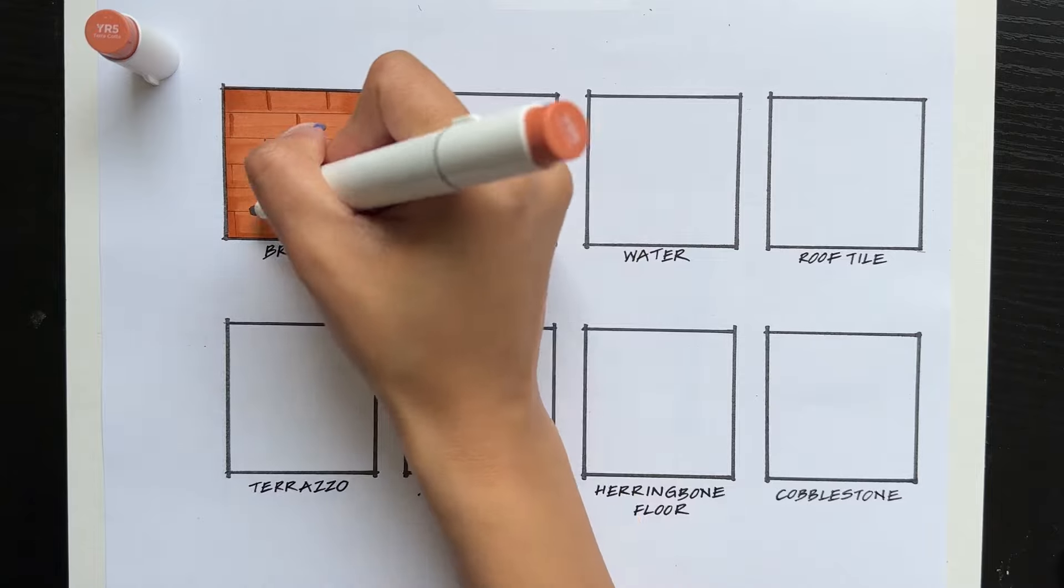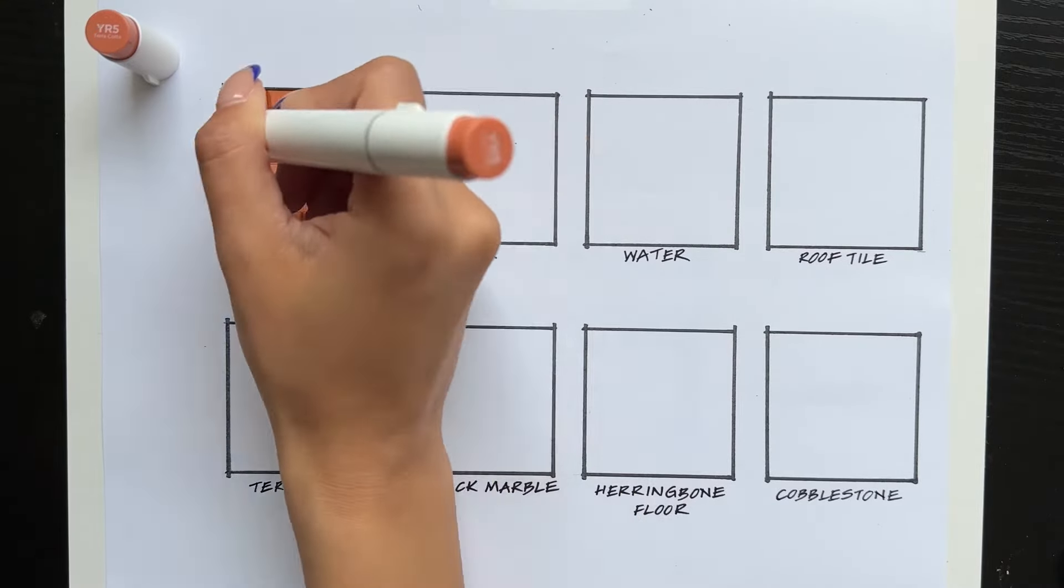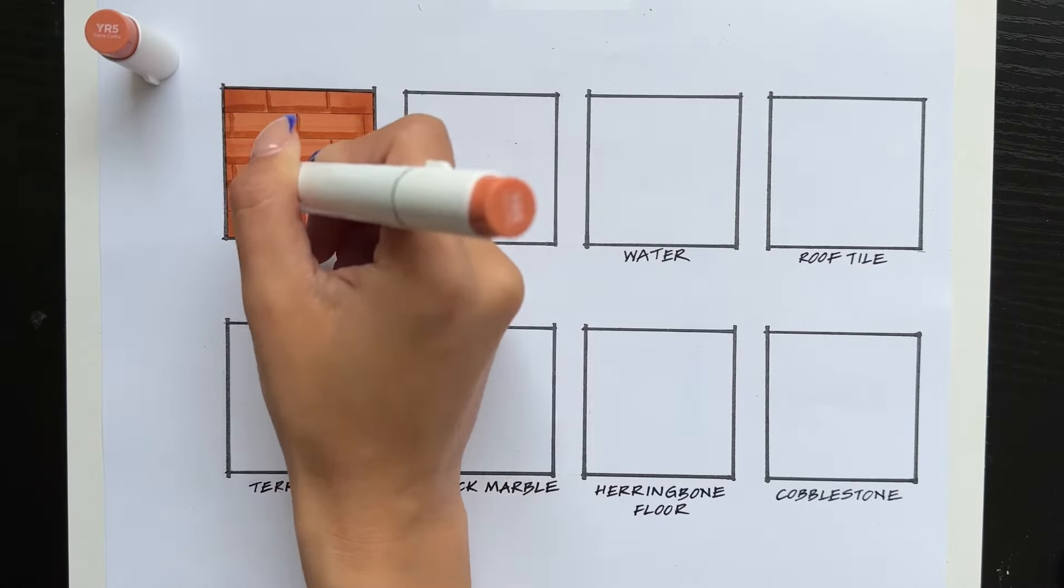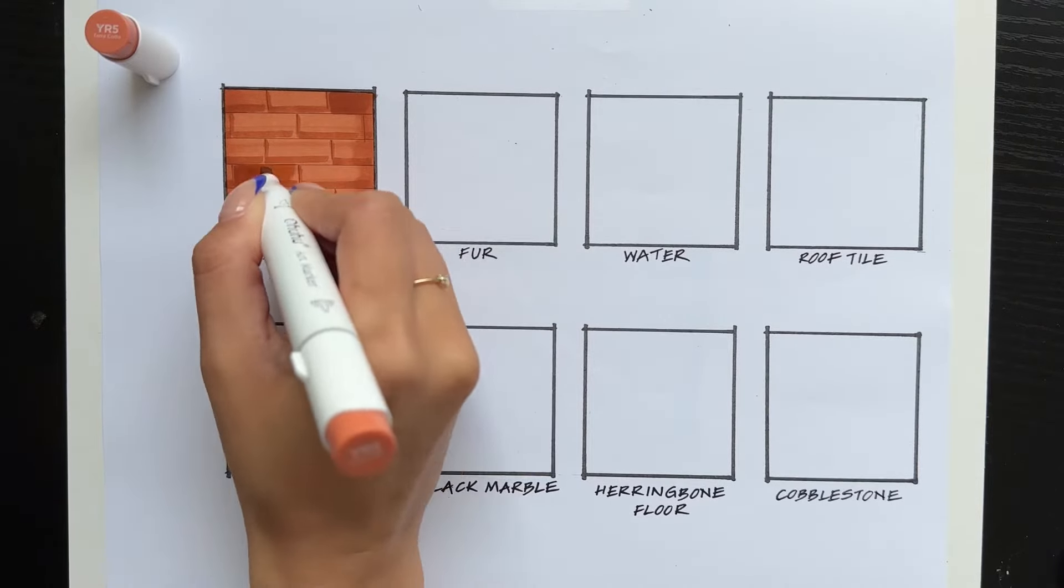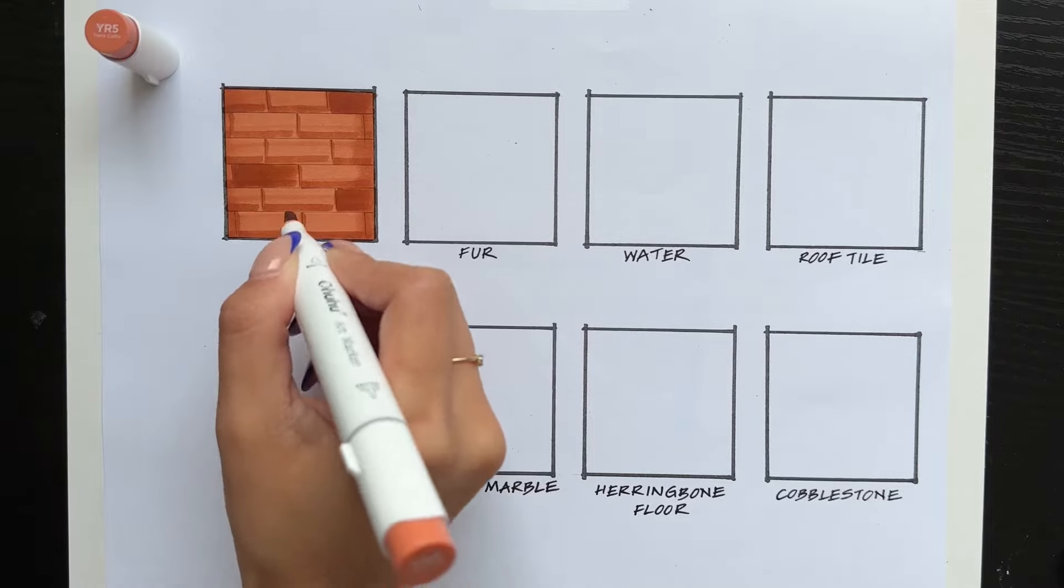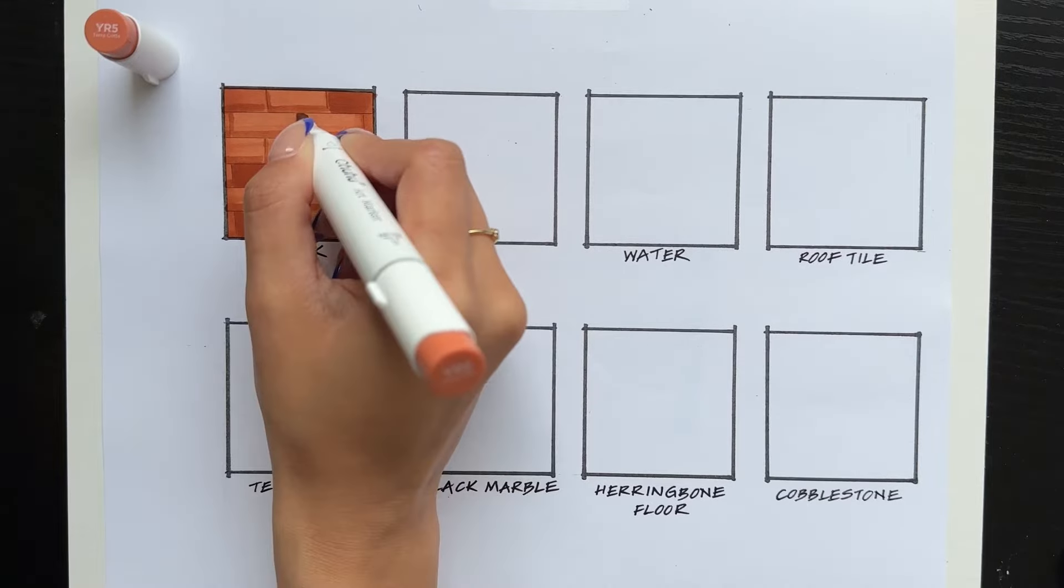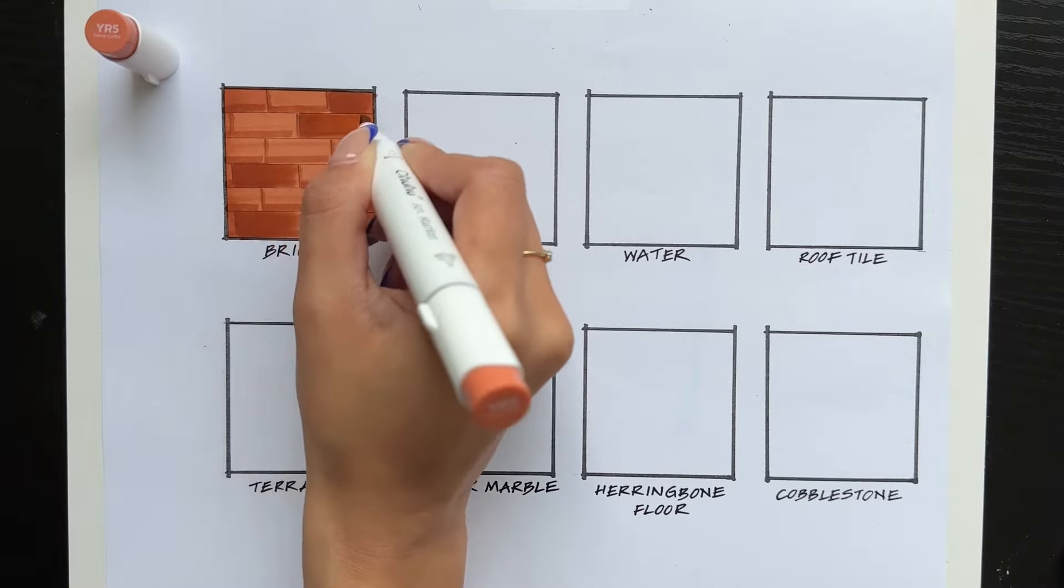Next, just to create some dimension, I'm going over the vertical lines of the brick and then also just the horizontal part at the bottom. After that, I'm taking the chisel tip side of the marker and just highlighting certain bricks again, just to make it look a bit more random.